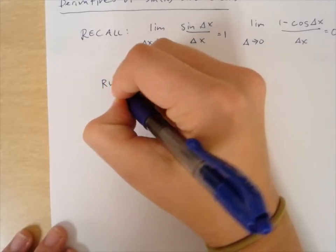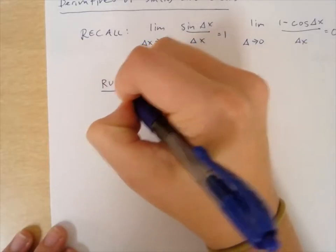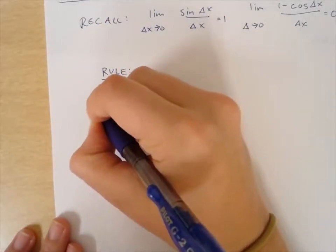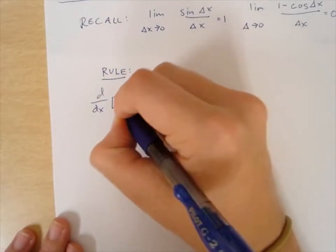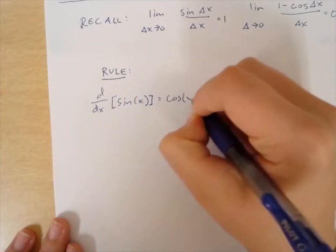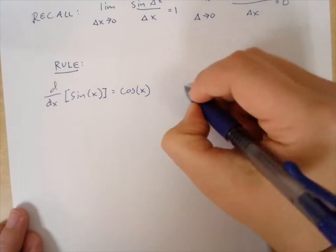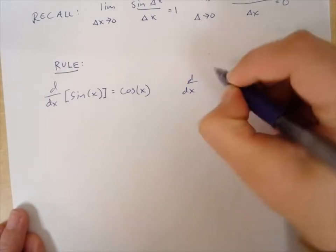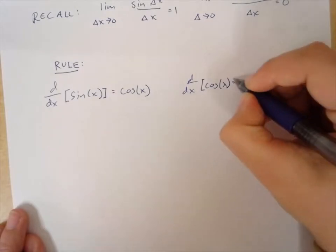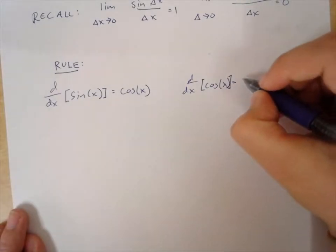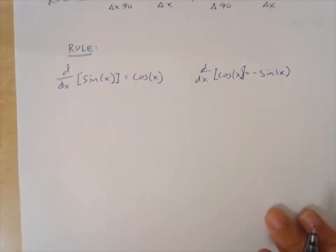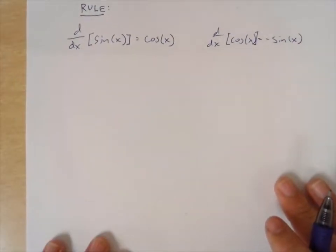The rule — which we can derive from a limit process — is that the derivative of sine of x is equal to cosine of x, and the derivative of cosine of x is equal to negative sine of x. I won't prove that right now with the limit process, but let's look at some graphs.